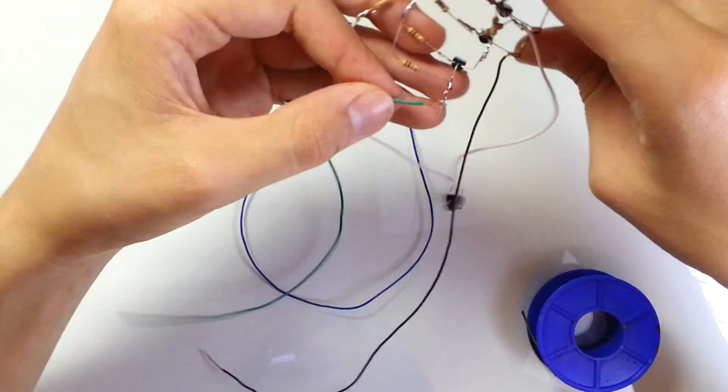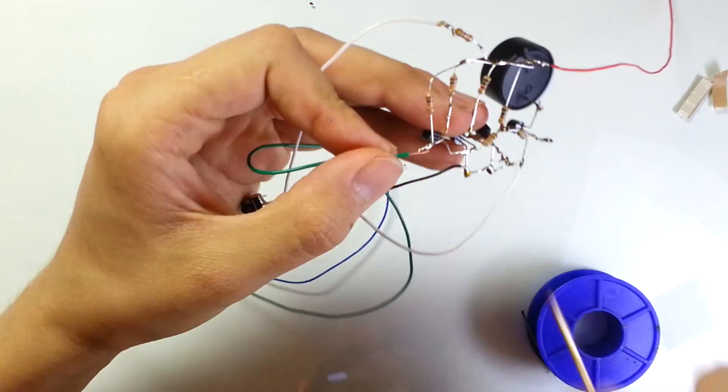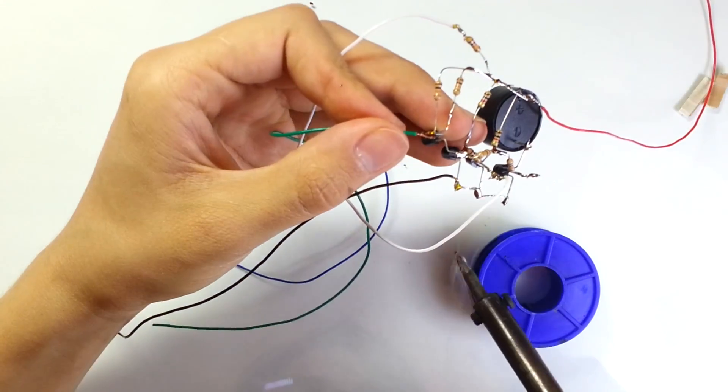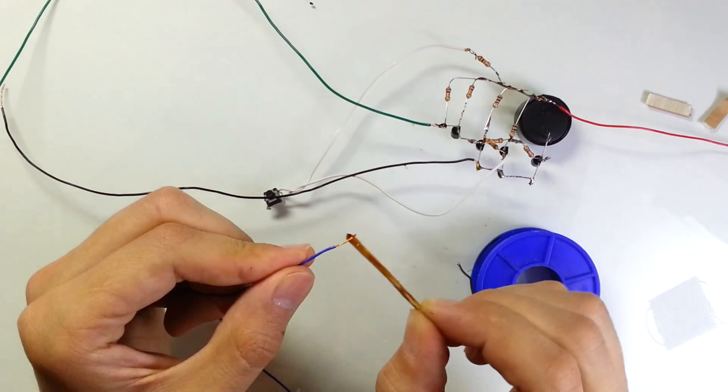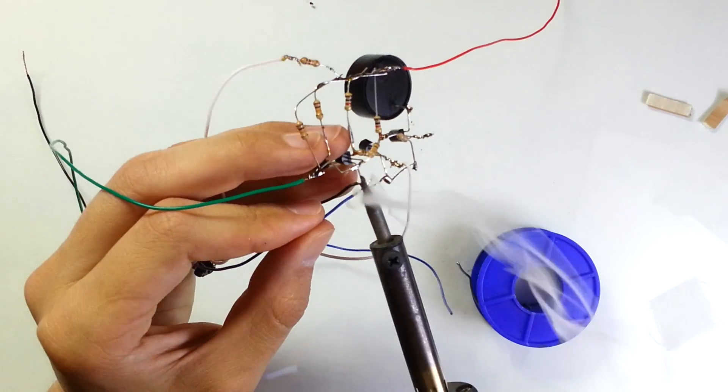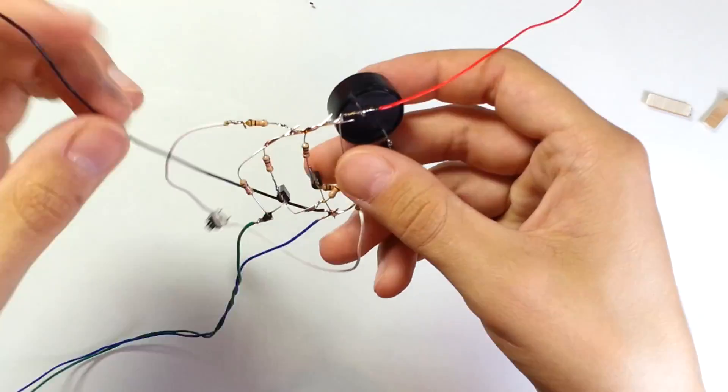Now let's connect two wires that will go from this device to the reed switch. Let's solder the first wire to the base lead of transistor Q1 and let's solder the second wire to the minus. This device is ready.